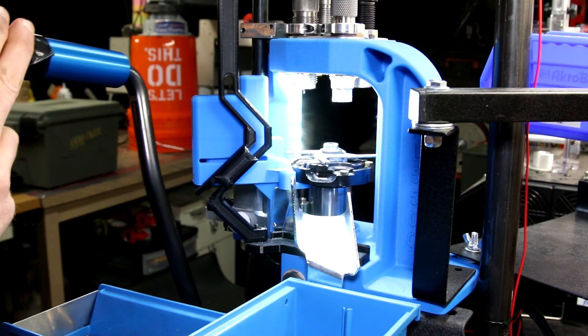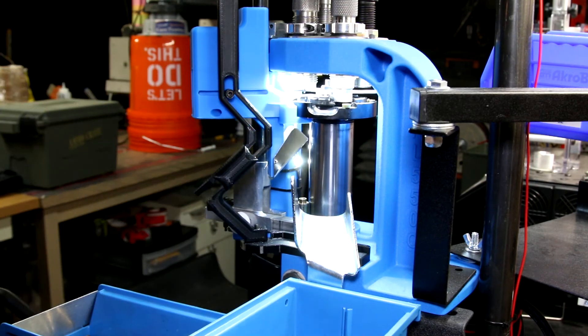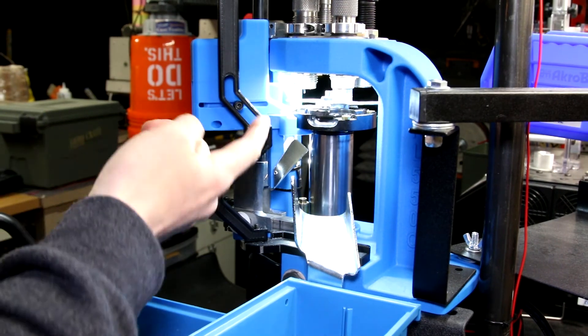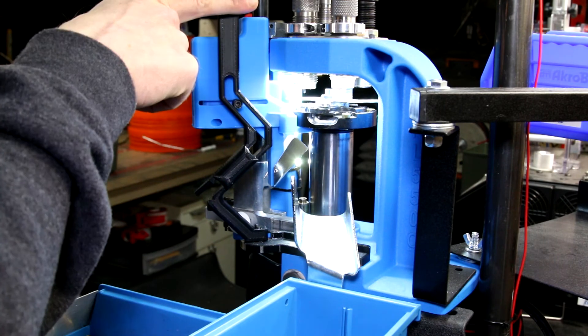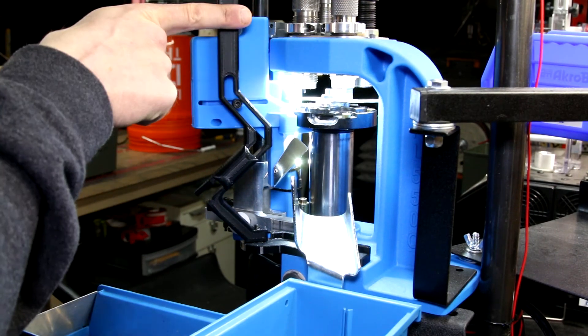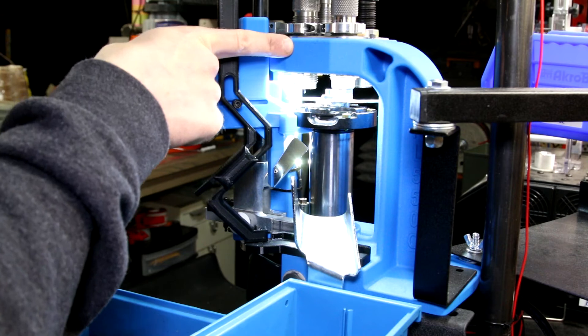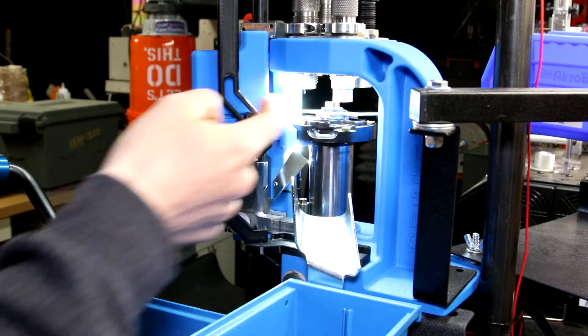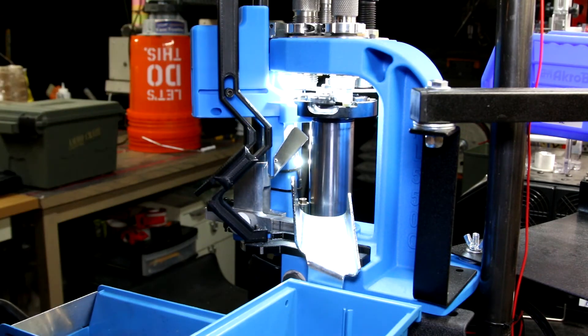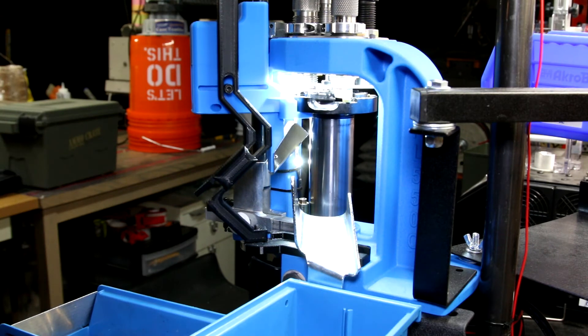Next thing we're going to have is the ram is going to hit. The way to adjust the ram timing is depending on how far forward the front of this guide goes. The closer forward to the press it goes, the closer the ram is. The further back it goes, the further away it is. So this just clears.